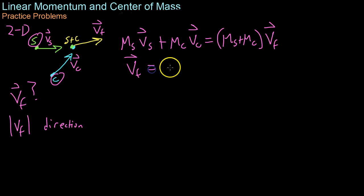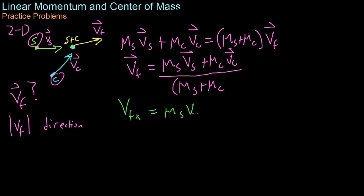But this doesn't tell us a whole lot because we can't really derive the direction of Vf too well. So what we can do is break these up dimensionally. And so we get that the x velocity equals the mass of S times its initial x velocity plus the same thing for C all over their total mass.